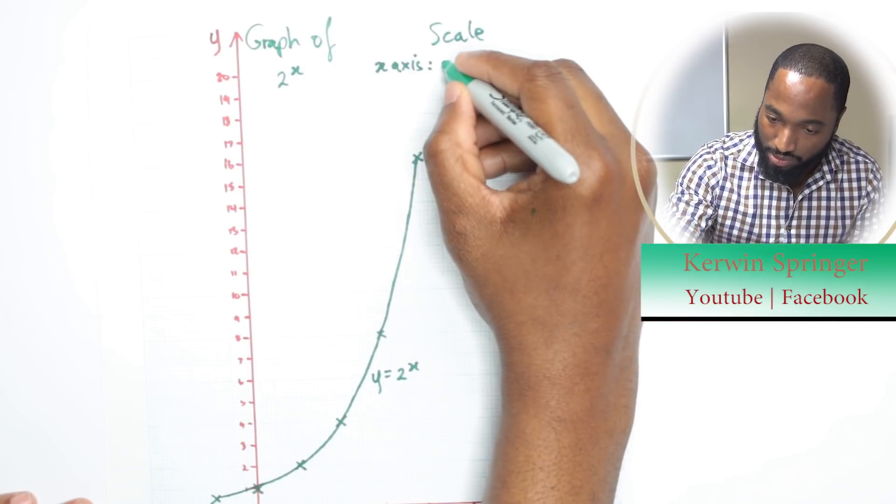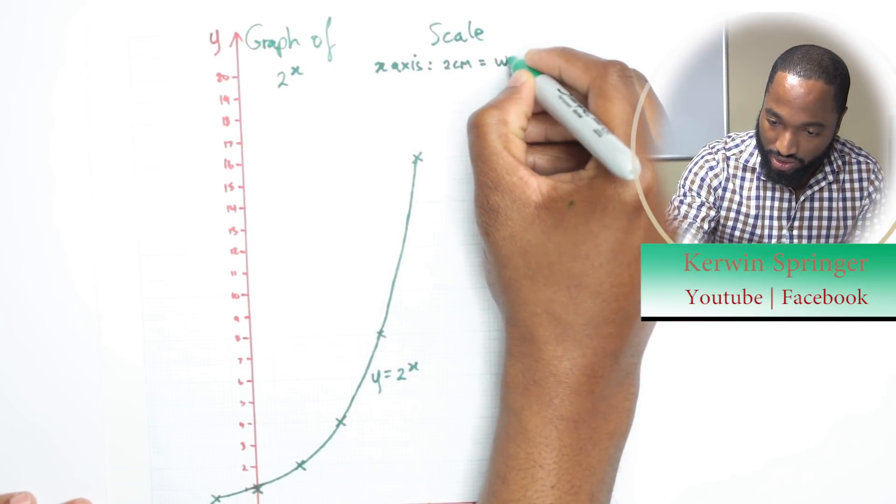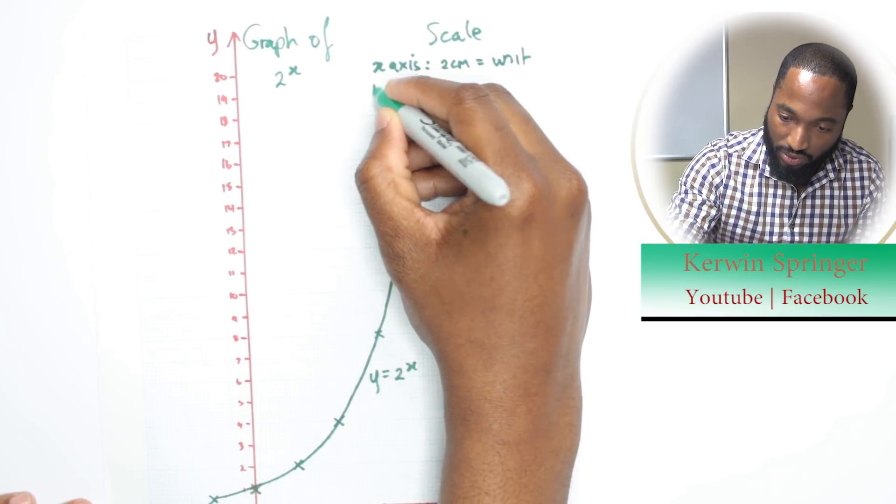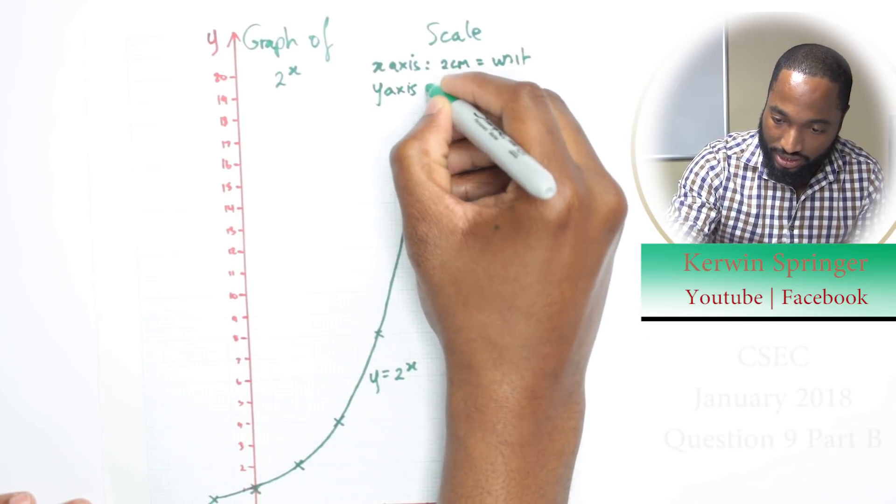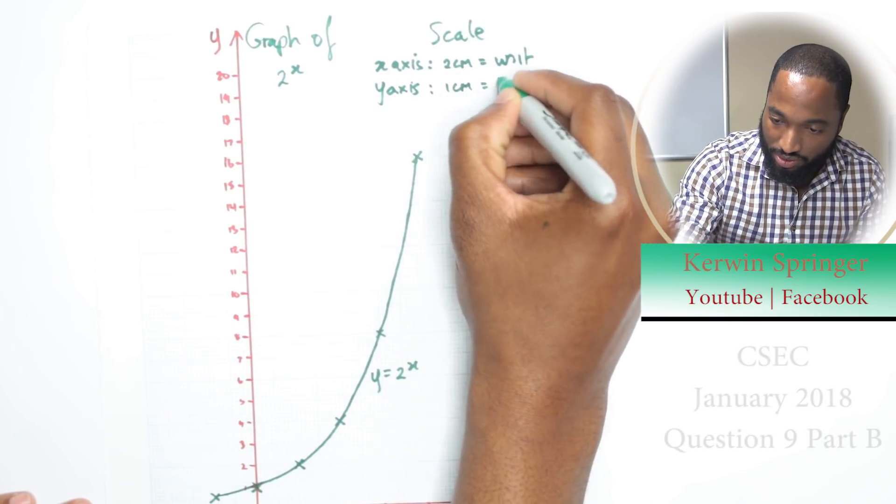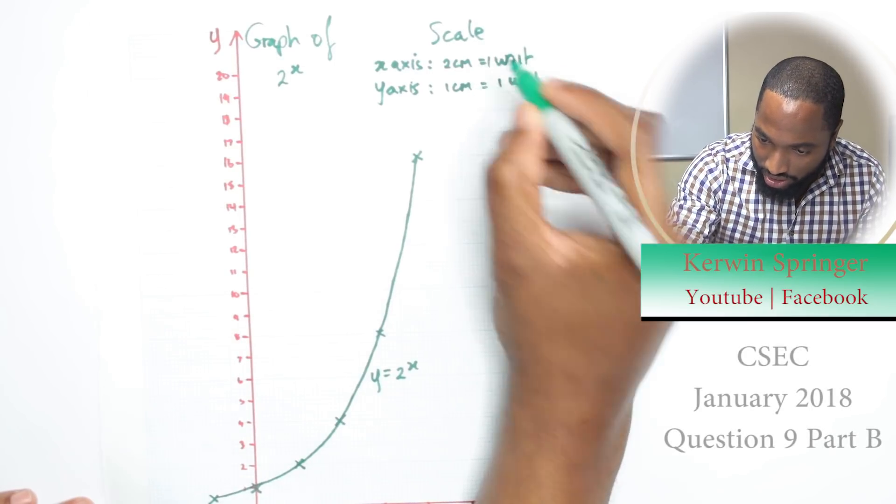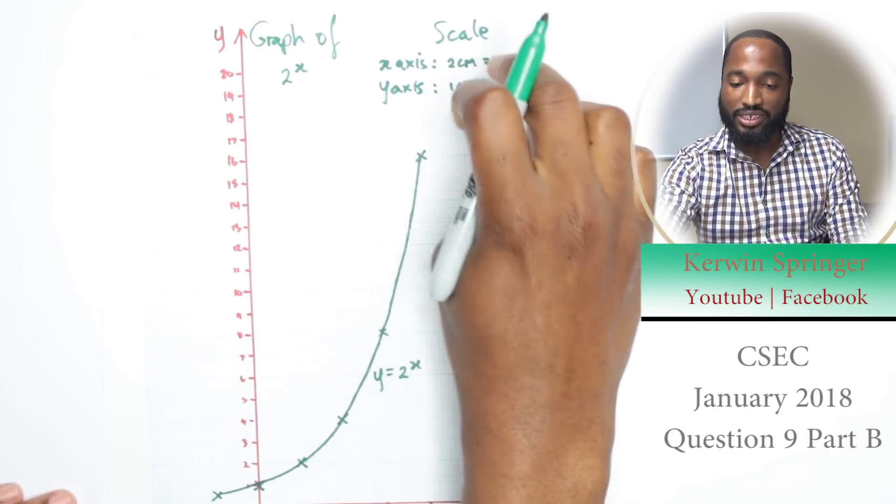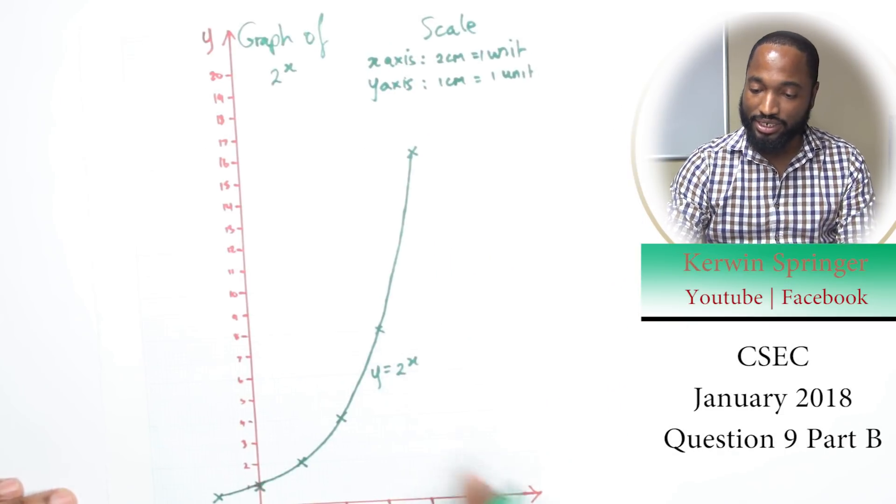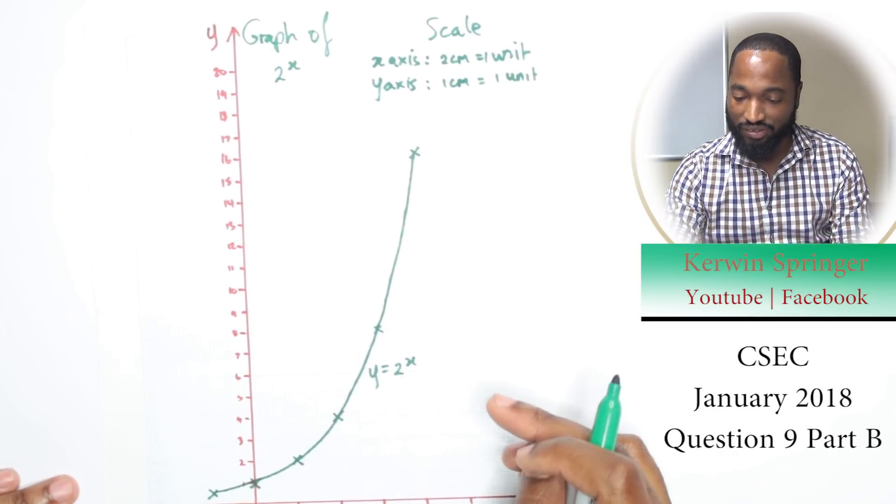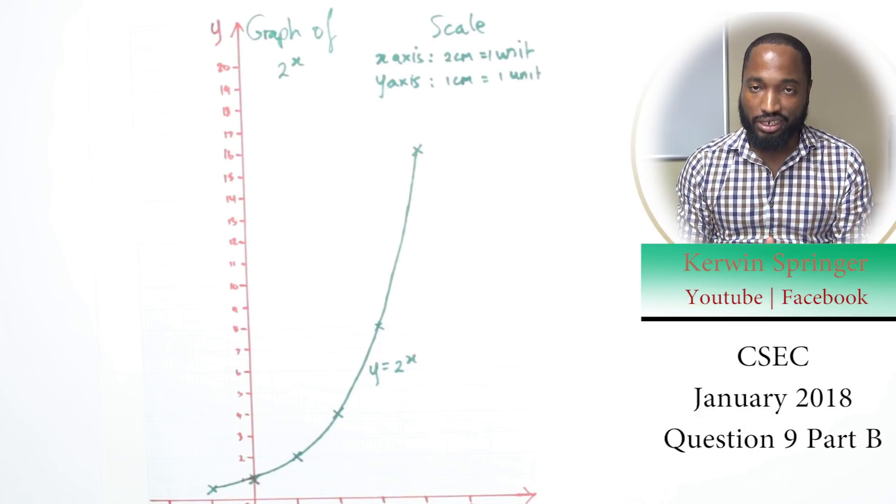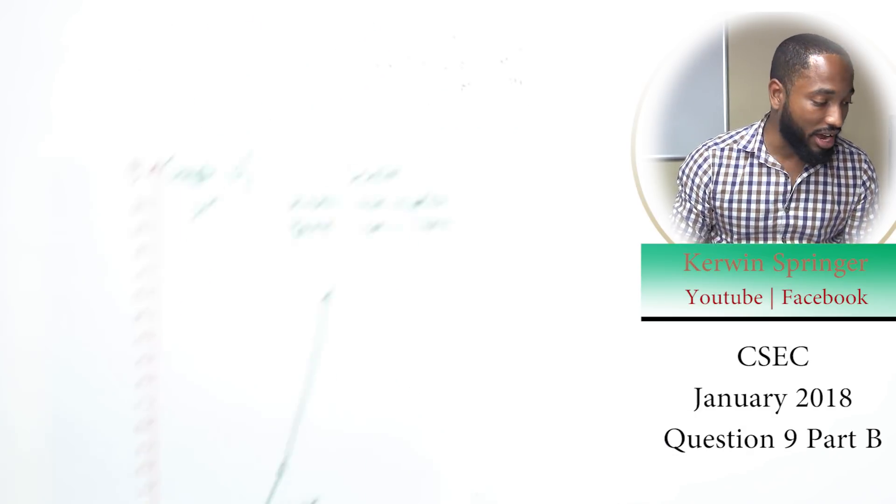Two centimeters equals one unit. For the y-axis, one centimeter equals one unit. So you're putting your scale, you have your title, you have your labels, and you label the actual graph itself. What more could they want? Nothing.